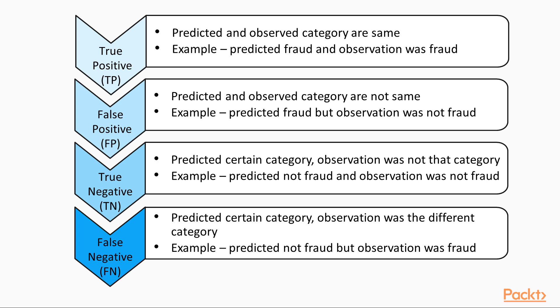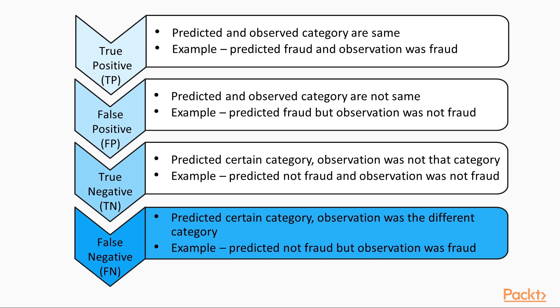To understand these metrics and determine which is appropriate for our use case, we need to realize that there are a number of different scenarios that could occur when making discrete predictions. True positive (TP): we predicted a certain category, and the observation was actually that category — for example, we predicted fraud and the observation was fraud. False positive (FP): we predicted a certain category, but the observation was actually another category — for example, we predicted fraud but the observation was not fraud. True negative (TN): we predicted that the observation wasn't a certain category, and the observation was not that category — for example, we predicted not fraud and the observation was not fraud. False negative (FN): we predicted that the observation wasn't a certain category, but the observation was actually that category — for example, we predicted not fraud but the observation was fraud.